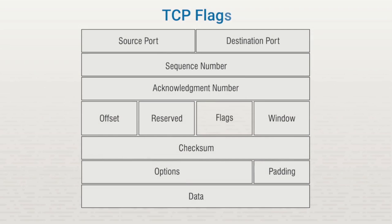TCP packets have flag indicators. Two of these indicators are SYN and ACK. SYN starts a connection between two systems. ACK acknowledges that a packet has been received. There are other flag options as well. Any of these indicators can be turned on or off using a packet crafter.